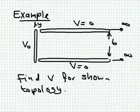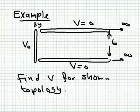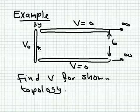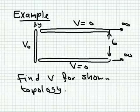We have here a problem. We have two electrodes — these are infinite in the z-direction. I'm showing you here the x-y plane. They are both kept at zero potential, and the structure is open from this side. They extend to infinity in the x-direction as well. At x equal to zero, we have an electrode which is kept at a potential V₀. The zero-potential electrodes and the V₀ electrode are insulated from one another, so they are not touching.